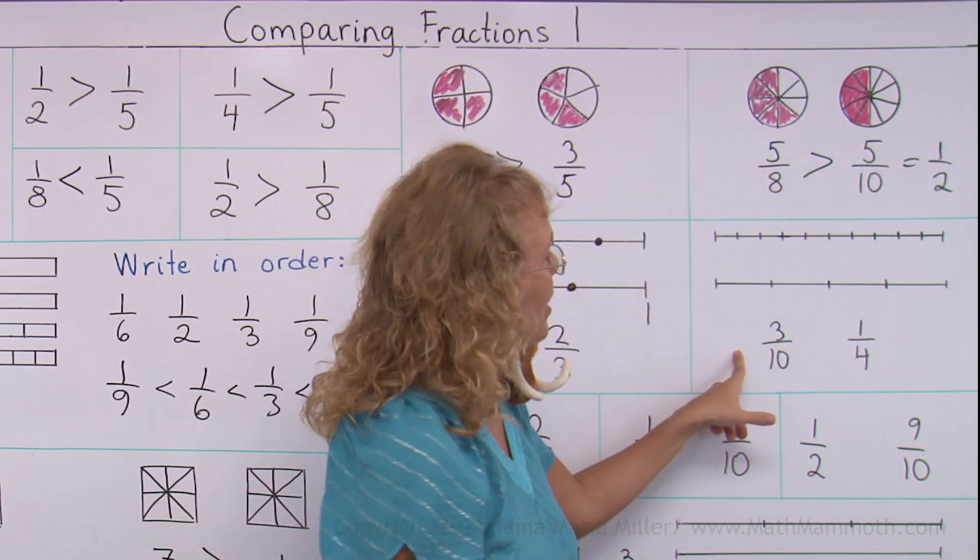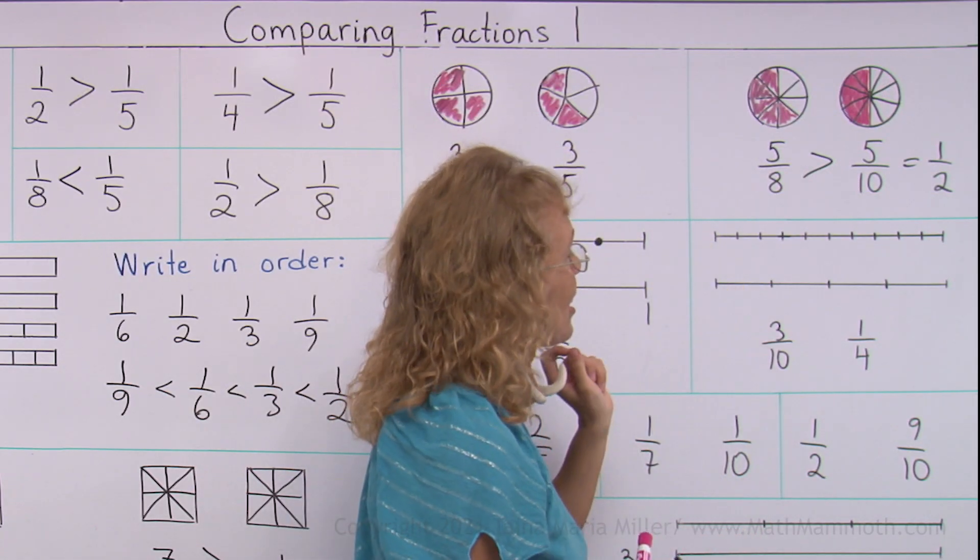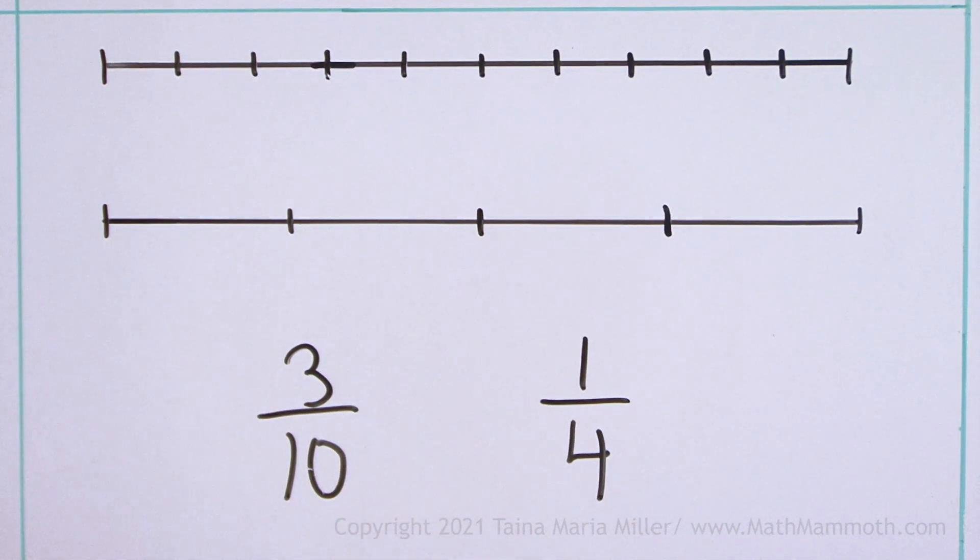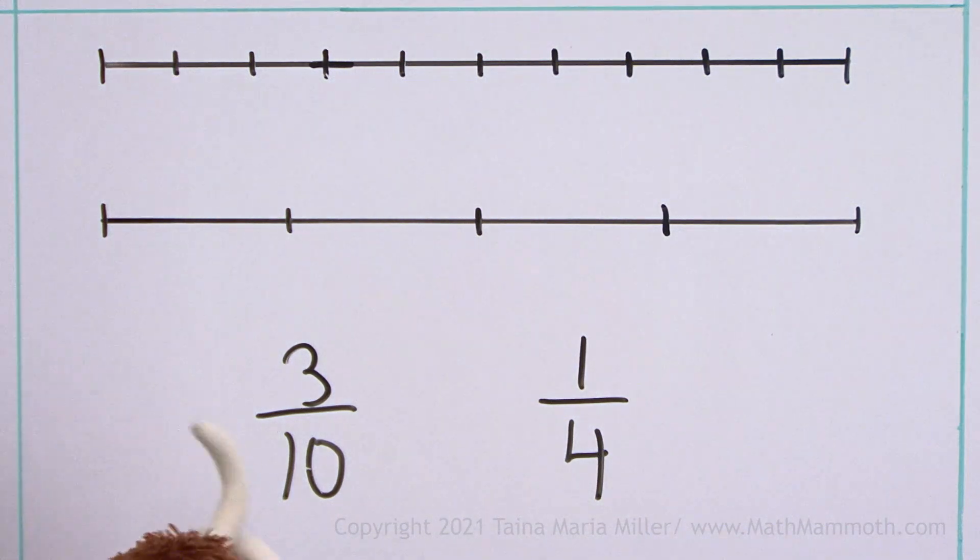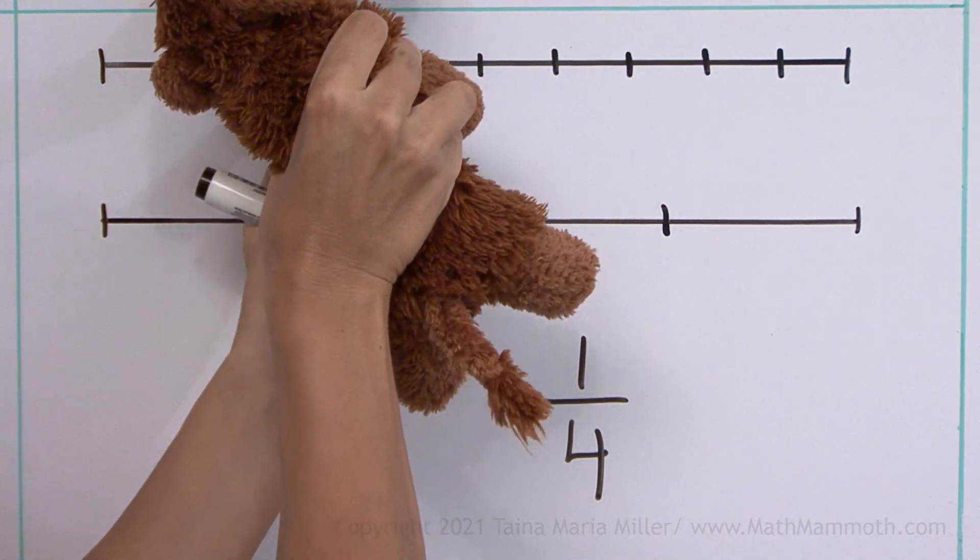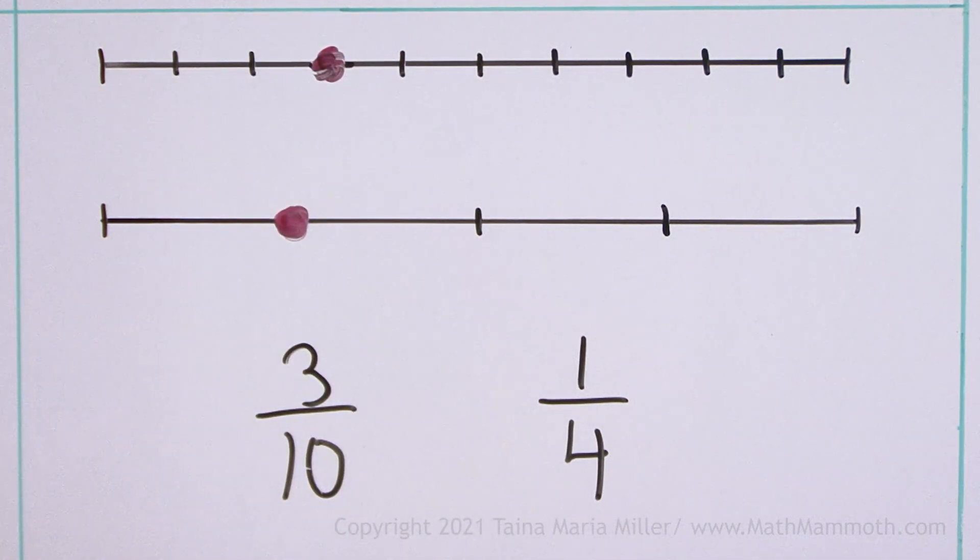We can do the same here. This time the number lines are already divided into the right amount of parts: three-tenths and one-fourth. Okay, we can see three-tenths is the greater fraction.